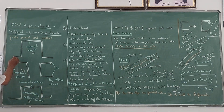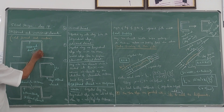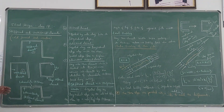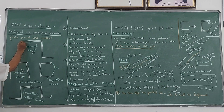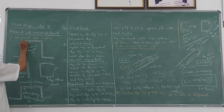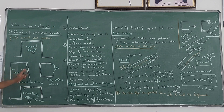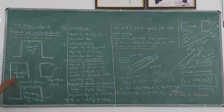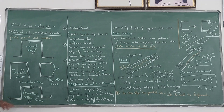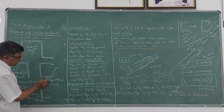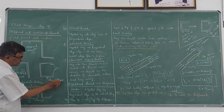Here I have taken a cold-formed steel section of this shape — a hat shape. This portion is taken as a stiffened element. If you take another section like this, these two are taken as unstiffened elements, and in this case this is called a yet-stiffened element.